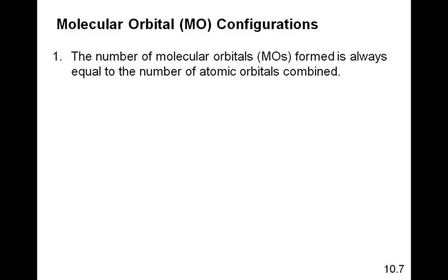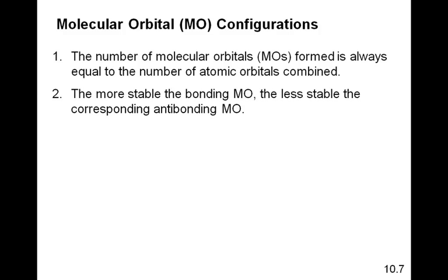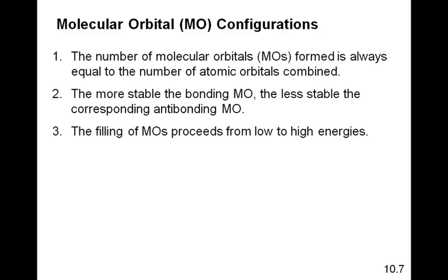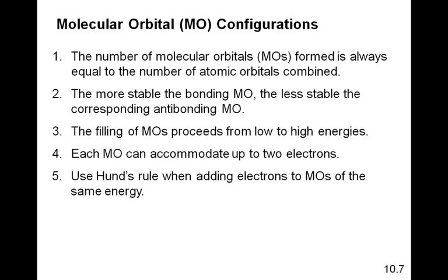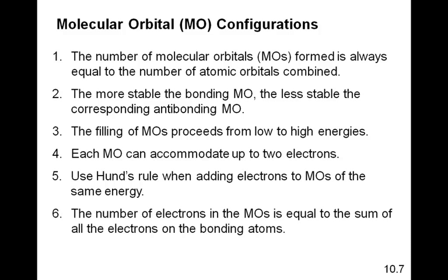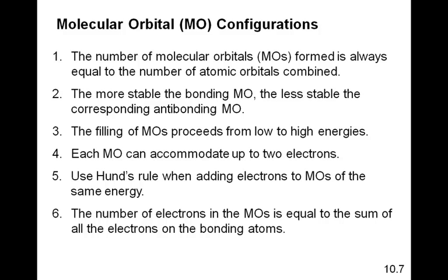The first rule is that the number of molecular orbitals formed is always equal to the number of atomic orbitals combined. The more stable the bonding molecular orbital is, the less stable the corresponding anti-bonding orbital is. The filling of molecular orbitals proceeds from lowest energy to highest energy — that's why both electrons in hydrogen go into the bonding orbital first. Each molecular orbital can accommodate up to two electrons. Use Hund's rule when adding electrons to molecular orbitals of the same energy — put one in each before putting two in one. The number of electrons in the molecular orbitals equals the sum of all electrons in the bonding atoms.